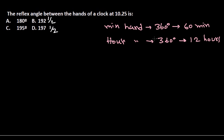So we know from our previous video, now in this case, the reflex angle between the hands of the clock means the angle between the two hands, minute hand as well as hour hand, of the clock. At 10:25, this is what we need to find.